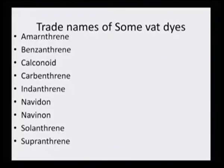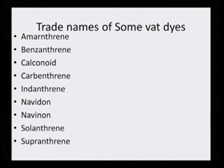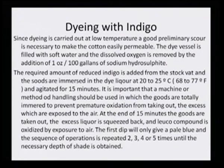Some trade names of commercial synthetic VAT dyes include: amaranthrine, benzanthrone, calconoid, carbanthrone, indanthrone, nevidone, nevinone, solanthrone, and supranthrone. These are different types of VAT dyes synthetically produced and have been used in the dyeing industry for a very long time. Natural class VAT dyes include indigo, acetin, and related compounds.